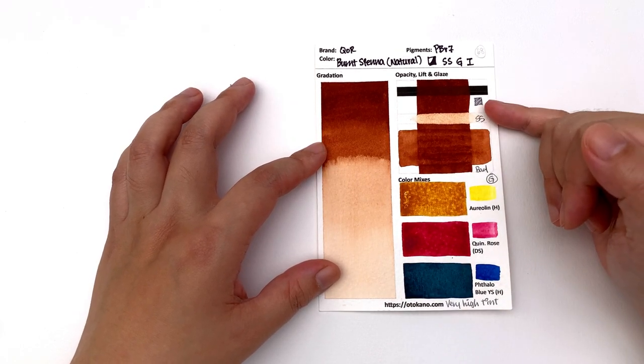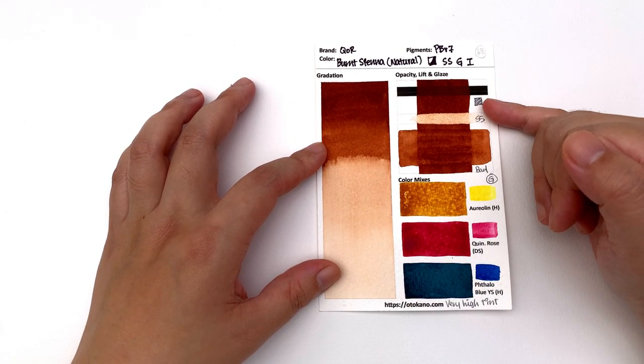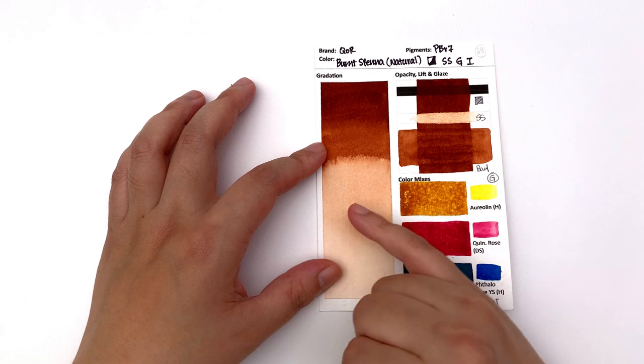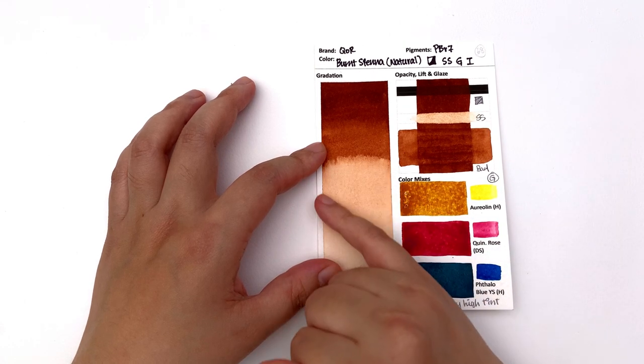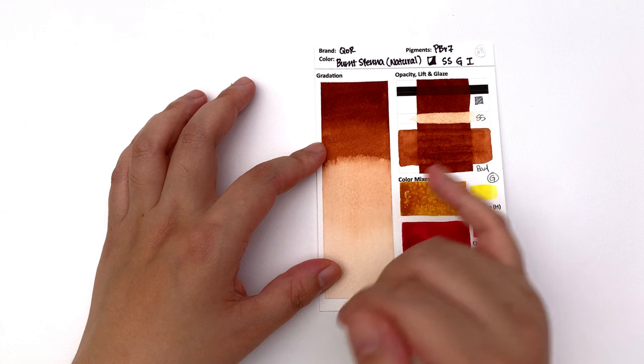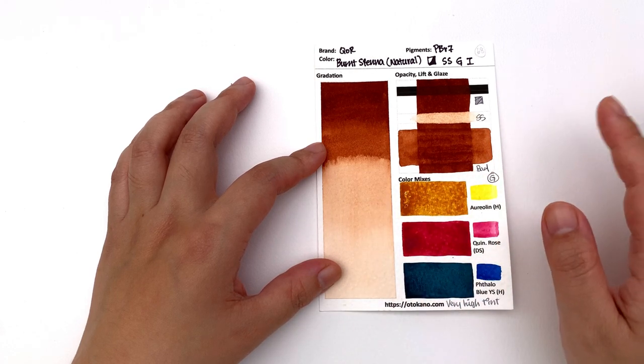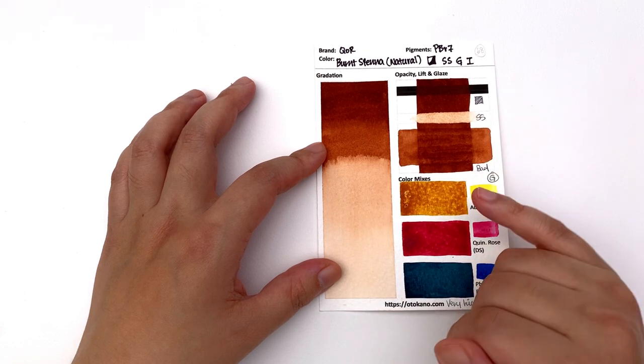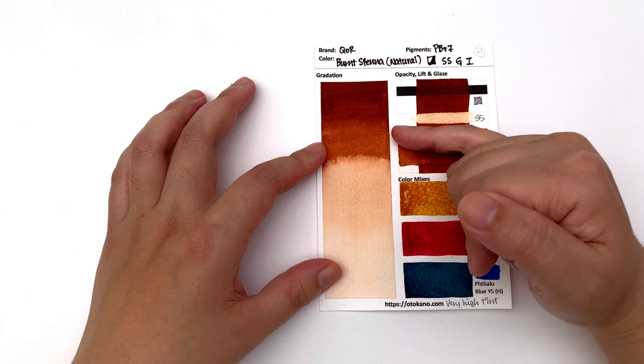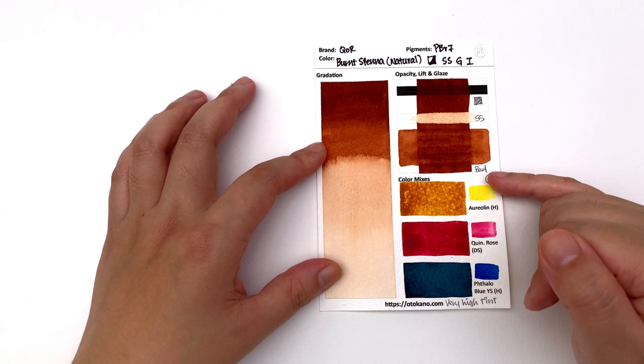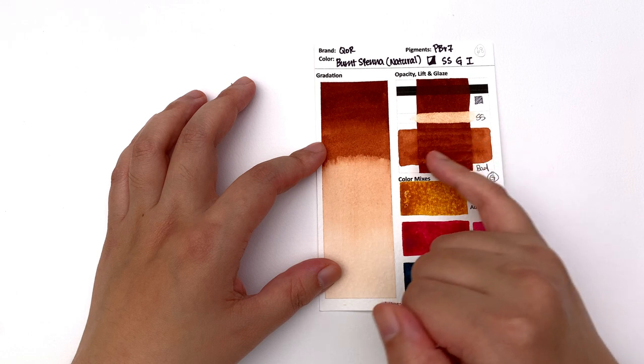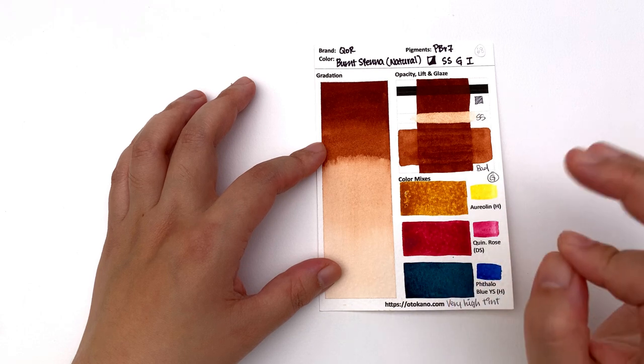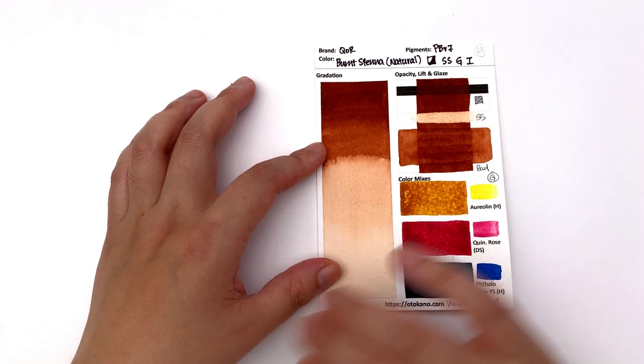It is classified as semi-opaque and I would say this is opaque. It is classified semi-staining and I would agree with that. It's classified as granulation and I can just about see some granulation here, but not hugely. It's not like an ultramarine blue, but you really do see a lot of texture happening with the color mixes, but it won't be so obvious if you use it on its own. It's not great at glazing. You see a lot of lifting and unevenness happening. So if you are wanting to do lots of glazes, I would use the other two colors rather than this one.